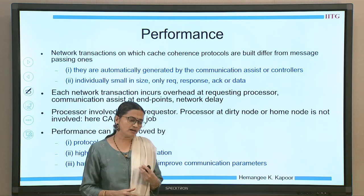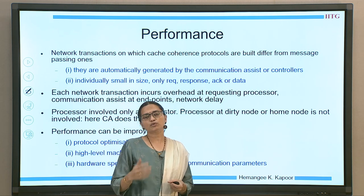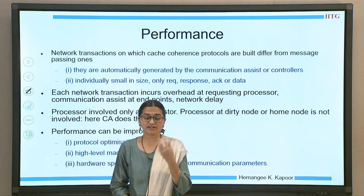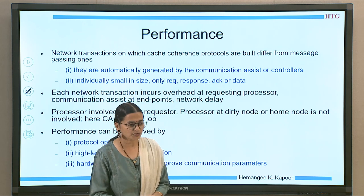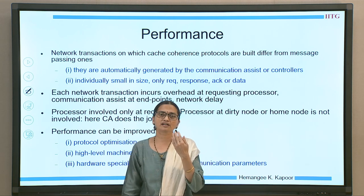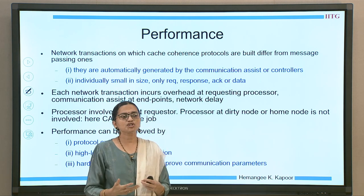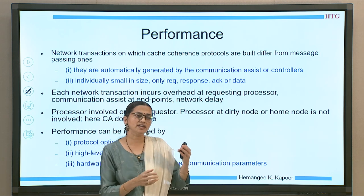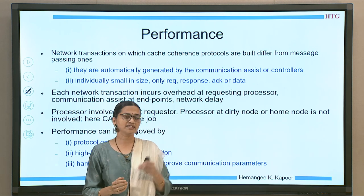We are discussing directory coherence, and overall a set of network transactions is the topic. To improve performance, I need to consider various aspects of a network transaction. In a normal message passing interface, one computer generates a message which goes through the network to the other computer — done at the software level. But in a shared memory system, implicit messages get generated automatically by the protocol — not by the processor, but by the communication assist or the cache controllers.